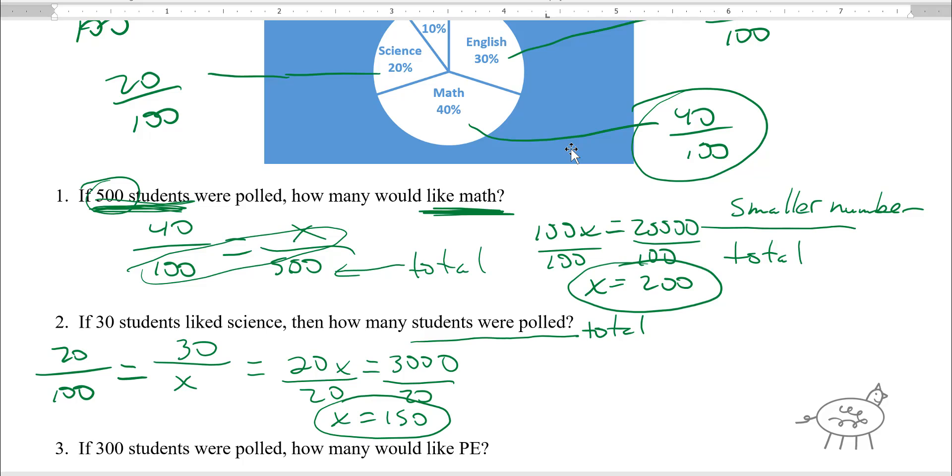Now remember, the smaller number is always on top. If you notice, this is 30, it's the small number. 150 is the bigger number. So if that ever messes up and you have the wrong number, you have a bigger number on the top, then you switch them.